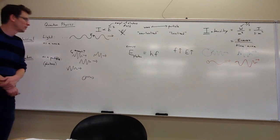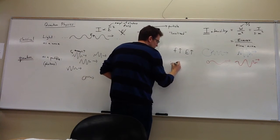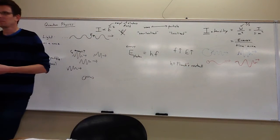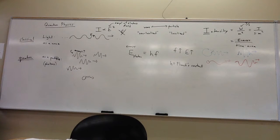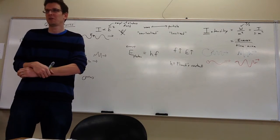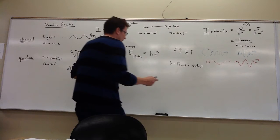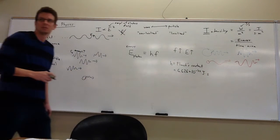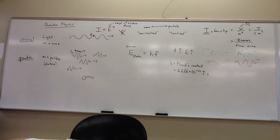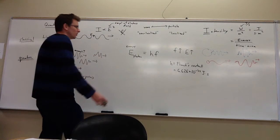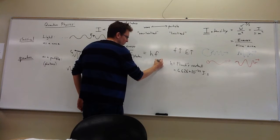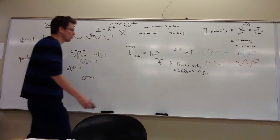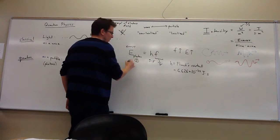Before too long I should tell you the constant h — this is called Planck's constant. Its only purpose is that it takes the frequency and converts it into energy. The constant, in SI units, is 6.626 times 10 to the minus 34 joule-seconds. If you plug it in, frequency is measured in hertz, which is inverse seconds, then you multiply that by joule-seconds, the seconds cancel, and you end up with energy in joules.